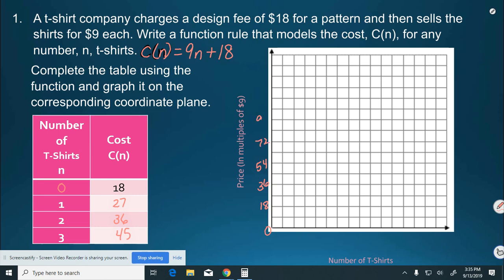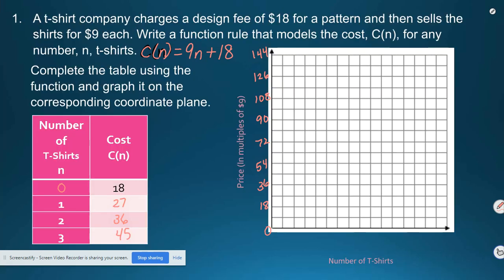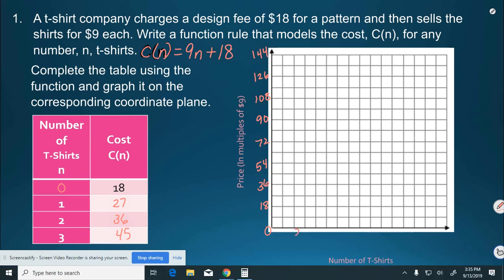108 plus 18 more, 126 plus 18 more, 144. That's our price. And then our number of t-shirts is just by one. So, we could do one for each box or two every other.